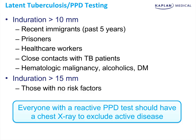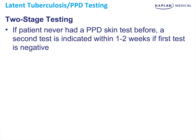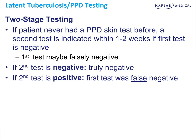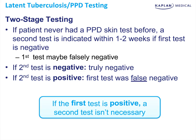Remember, everyone with a reactive PPD test should have a chest x-ray as the next step to exclude active disease. The PPD itself is actually a two-stage test. If the patient has never had a PPD before, a second test is indicated within one to two weeks if the first test is negative, because the first test may be falsely negative. If the second test is negative, you can be certain this is a true negative. If the second test is positive, that means your first test was actually a false negative. If the first test is positive, a second test is not necessary.